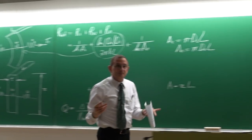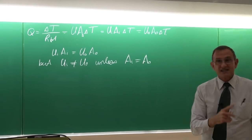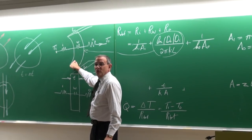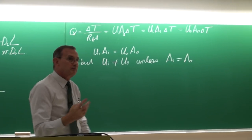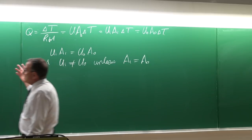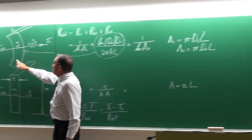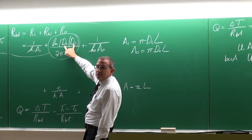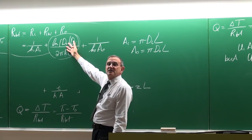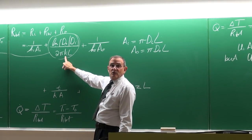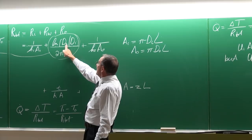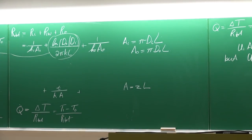The inside and outside areas become approximately equal when the wall thickness is very small. If the wall is very thin, the ratio Do/Di is almost one, and ln(1) is zero, so the wall resistance becomes negligible. This means it doesn't matter what material the heat exchanger is made from — plastic, stainless steel, or copper — if the wall thickness is very small, you can ignore the resistance through the wall.